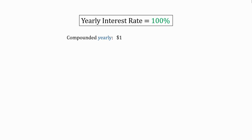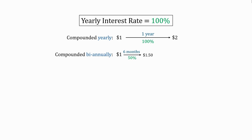If we put $1 into a bank account and assume the interest is calculated yearly, at the end of the year we'll have $2. But what if it calculated the interest twice a year instead? By the sixth month we'd have $1 plus the 50% interest, or $1.50, and at the end of the year another 50% of interest accrues, so we get $2.25.